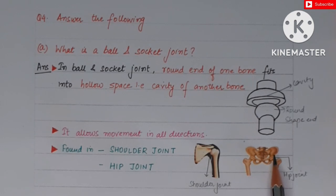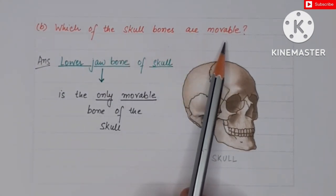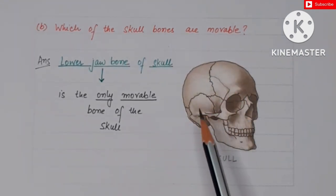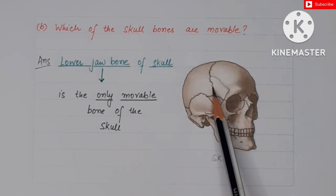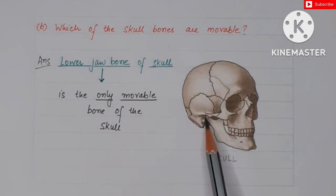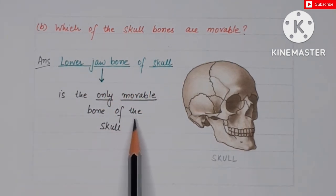The next part is: which of the skull bones are movable? Which bones of the skull can move? So this is the skull. In the skull we saw that all the bones are joined to each other by the fixed joint. They cannot move. Only one lower jaw bone is such a bone which is joined to the skull by the help of hinge joint. As a result of which the lower jaw can move in the upward and the downward direction. So its answer will be: the lower jaw bone of the skull is the only movable bone of the skull.